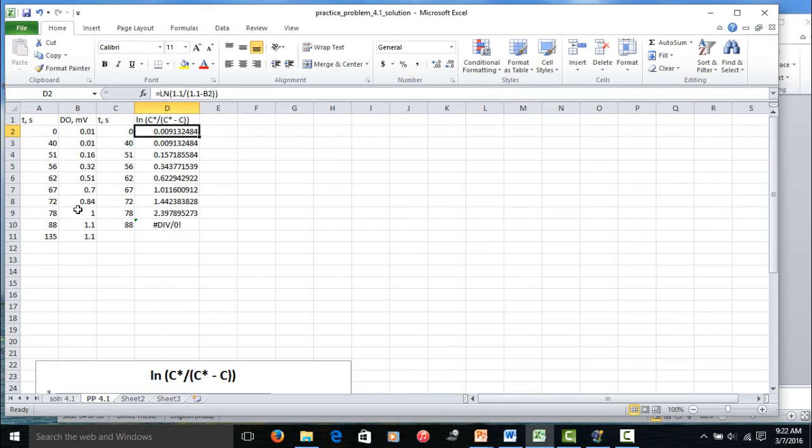To find C star, let us look at this data. You know, the DO level increases and reaches a constant value here, 1.1, 1.1. So, this indicates that the liquid has reached saturation or equilibrium condition with the gas phase, which is air here. So, this millivolt value is directly proportional to C star and therefore, let us take it as C star. If you take the constant as K times C star by K times C star minus C, K will cancel out.